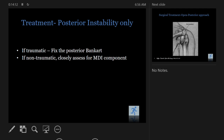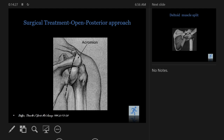If it's a traumatic posterior Bankart tear, it's a relatively easy fix — repair the labrum and that's good. But if it's non-traumatic, first make sure it's not MDI — that it's just posterior instability — and then look for glenoid version and fix accordingly. In my hands, if it's chronic posterior instability with glenoid retroversion and some cause for muscle imbalance, I'll do an open posterior approach rather than arthroscopy.